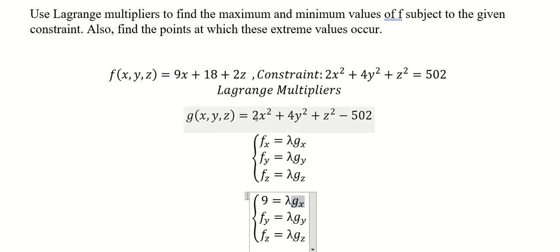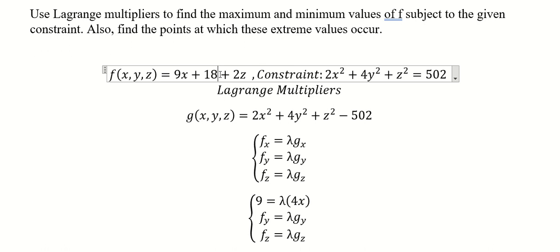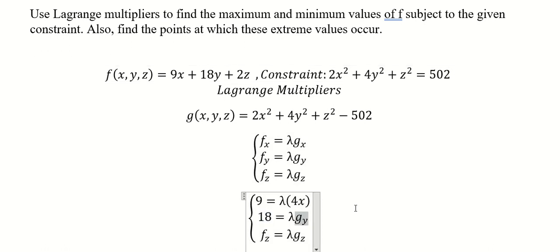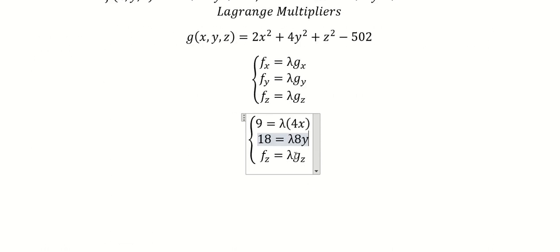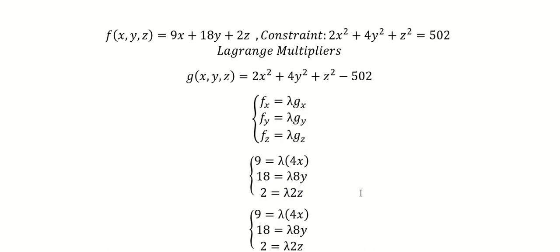This one is about 2x, so number two, and number two we have number four. Similar for y — this is one here. And this is about 8y, this is about 2z, this is about number two. Now we divide both sides by 4 lambda, 8 lambda, and 2 lambda, so we have like this.